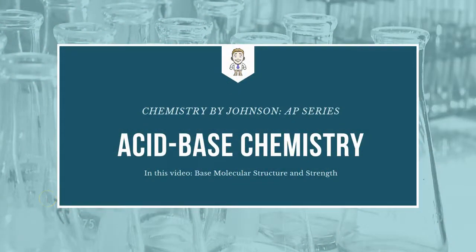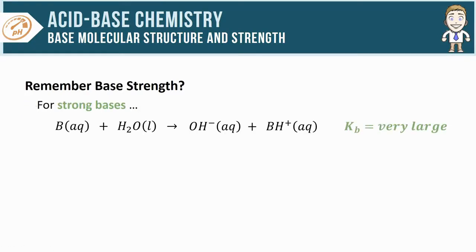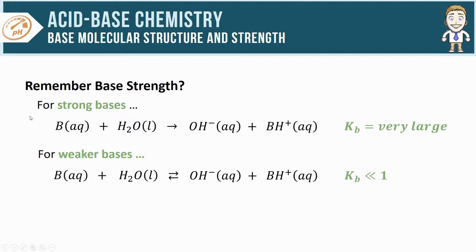Hey everybody, in this AP chem series video we're going to be taking a look at base molecular structure and strength. We've already seen that strong bases have very large Kb values and produce lots of hydroxide ions and conjugate acid represented here with BH plus. As the strength of a base decreases, the Kb value gets much lower and you make much smaller amounts of hydroxide ions and conjugate acid.